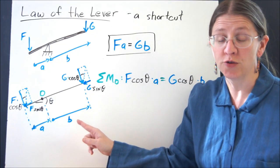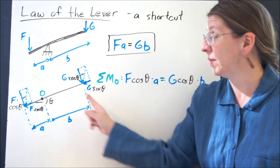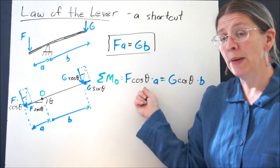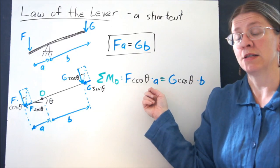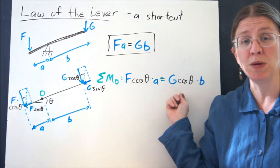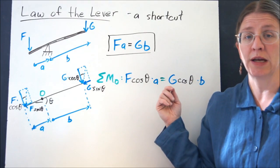Now forces that lie along the direction of the lever aren't going to cause a moment at O. So what I end up here with is fcosθ times a and gcosθ times b. Well of course the cosθs are going to cancel.